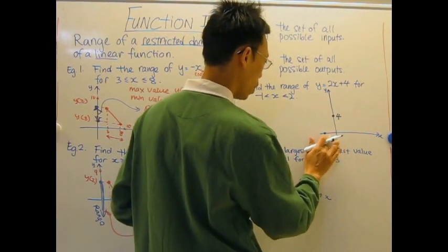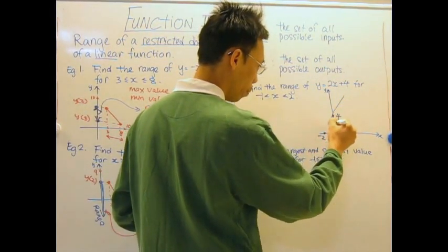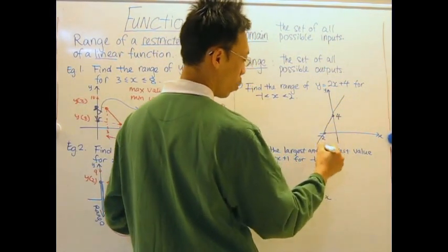So negative 2 is the x-intercept right here. And my graph is something like this. This is a straight line.